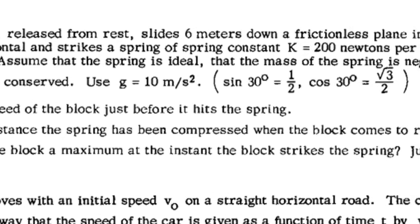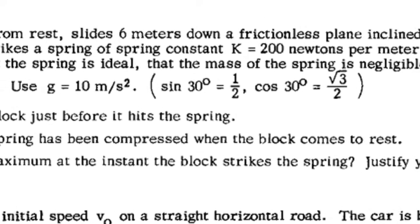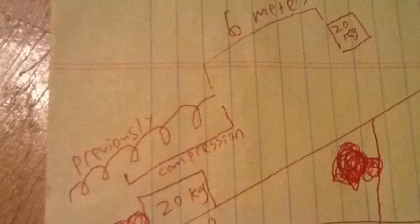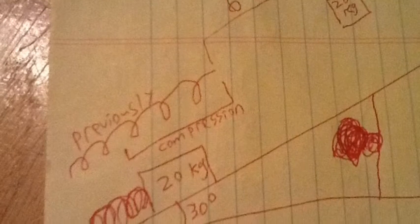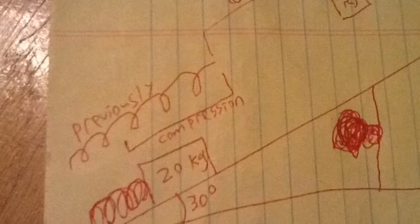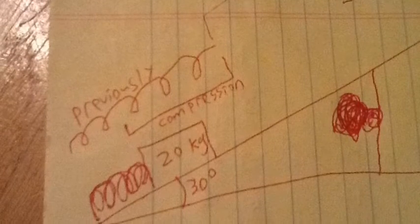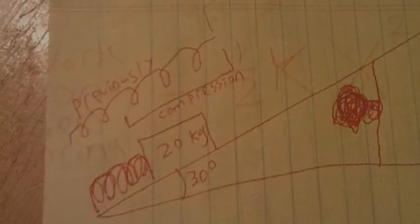Part B is to determine the distance the spring has been compressed when the block comes to rest. Again, for part B, energy equations will be used. A thorough understanding of these equations is vital to AP success as it allows you to determine how to solve a problem based on the variable you are solving for.